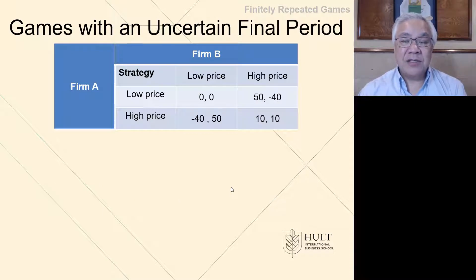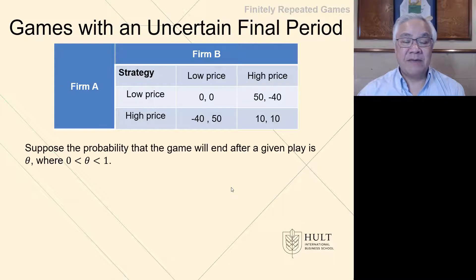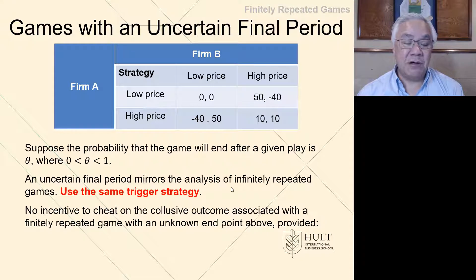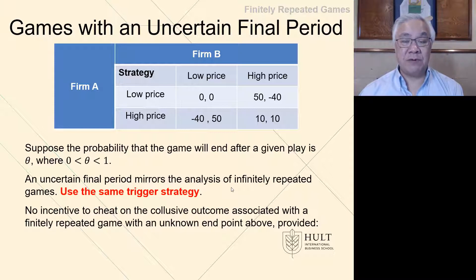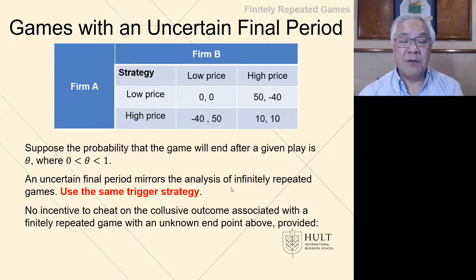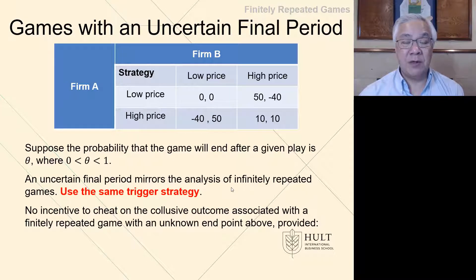The idea of an uncertain final period — using the payoff diagram we've seen previously — is that if there's a probability this is the last game, that would affect your decision. If you don't know, then you have to act as if it's going to continue. We use the same approach as under the trigger strategy: we can try to collude and have both firms be high-high at 10-10, and if there's a triggering event, we sink back into the Nash equilibrium at 0-0. So with an uncertain number of total periods, looking at collusion possibilities would work.